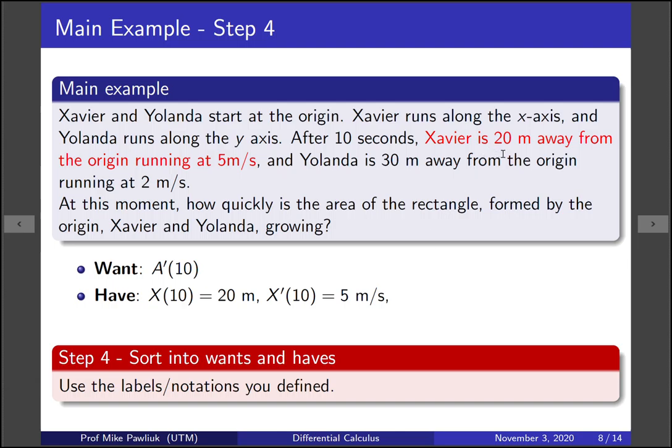We know that Xavier is 20 meters away from the origin and running at 5 meters per second at this given time. Can you express this in terms of x(t) and x'(t)? The first information tells you that at 10 seconds, his position is 20 meters, so x(10) = 20 m. And his velocity is 5 meters per second, which corresponds to the derivative of his position, so x'(10) = 5 m/s. What about Yolanda's function? At 10 seconds, her position is 30 meters and her speed is 2 meters per second, so y(10) = 30 m and y'(10) = 2 m/s. We've extracted what we have from the question. Also, let's write down the formula A(t) = x(t)y(t). Now we know what we want and what we have.